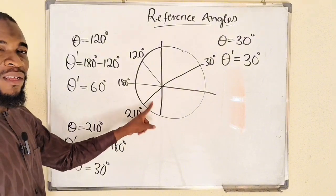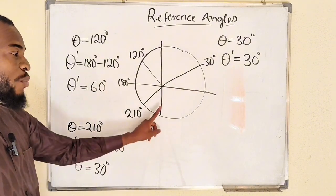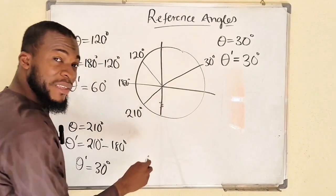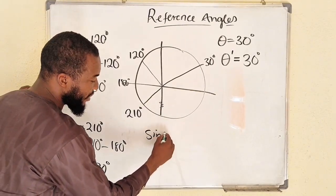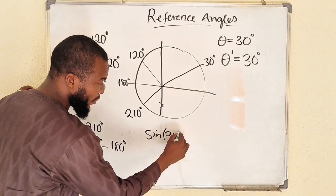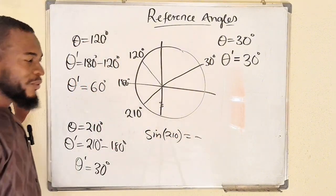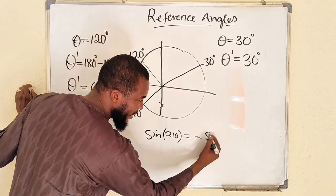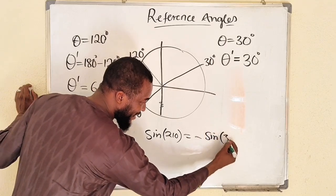Then you find out which sign is attached to sine in quadrant three. Sine depends on the y-axis, and we know that the y-axis is negative in quadrant three. Therefore, sine of 210 degrees will be a negative value, so you can just write negative sine of the reference angle, which is 30 degrees.